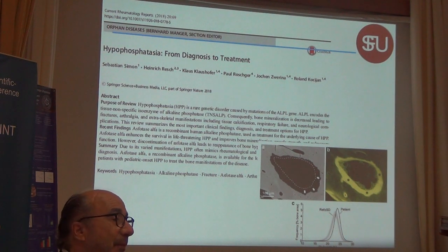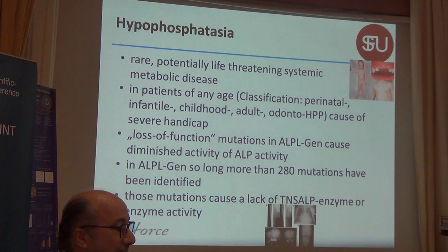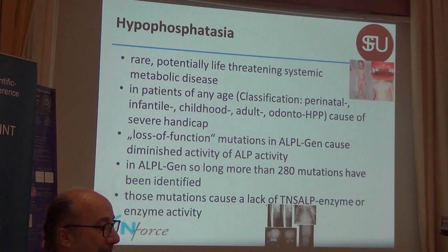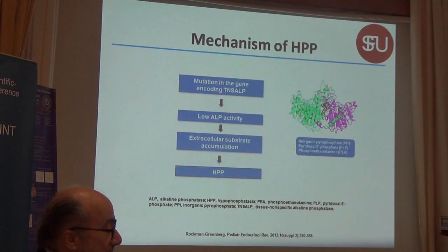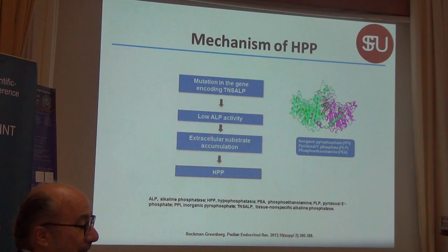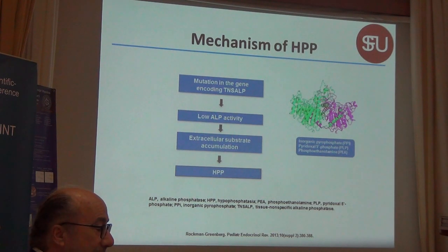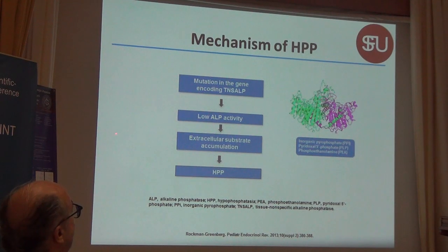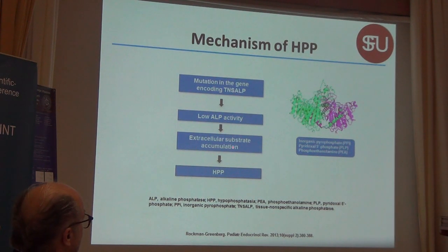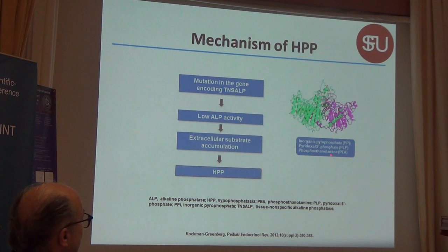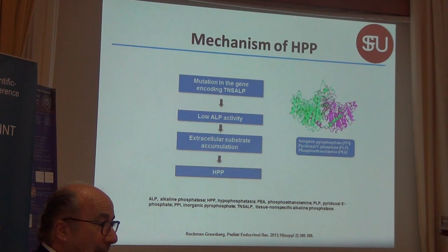This is our last publication, an overview on this disease. What is hypophosphatasia? It is rare. It can affect people at all ages and it is a loss of function of the alkaline phosphatase gene — a mutation in the gene encoding the nonspecific tissue-nonspecific alkaline phosphatase — causing low alkaline phosphatase activity, leading to substrate accumulation extracellular of inorganic pyrophosphate, pyridoxal phosphate, and PEA, which are very important substrates in the bone and in the brain.